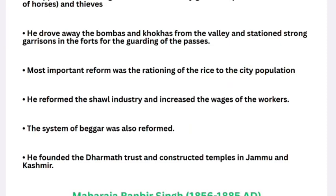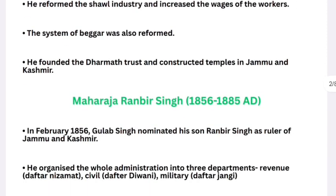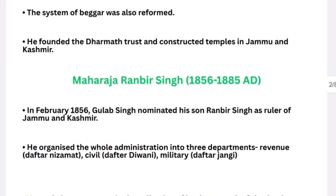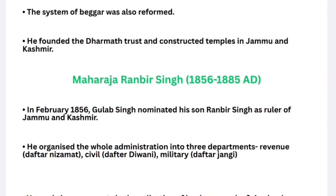Gulab Singh ruled from 1846 to 1857. The next — second — ruler was his son, Maharaja Rambir Singh, who ruled from 1856 to 1885. In February 1856, Gulab Singh nominated his son Rambir Singh as ruler of Jammu and Kashmir. Rambir Singh organized the whole administration into three departments.